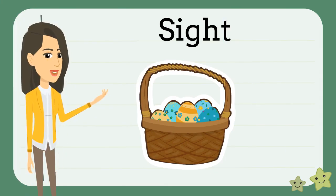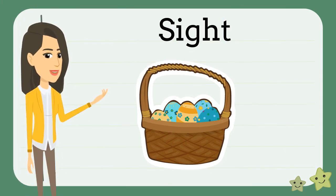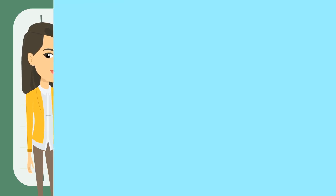For example, you might use your eyes to count the number of eggs in this basket. You can see that there are five eggs.